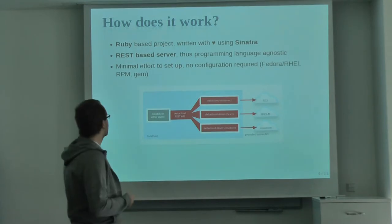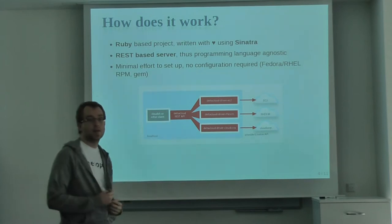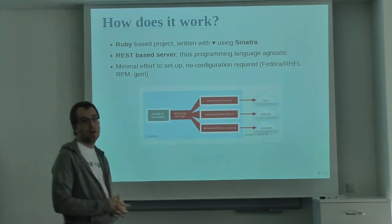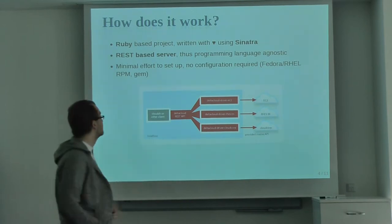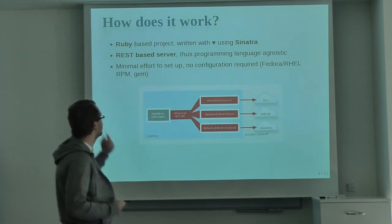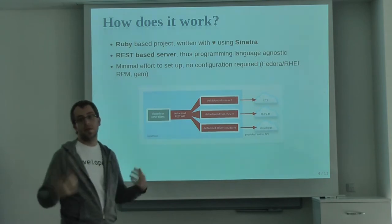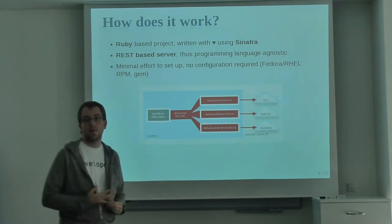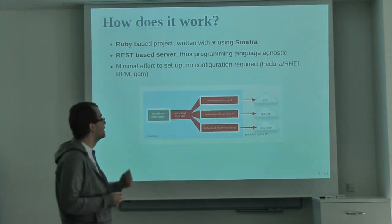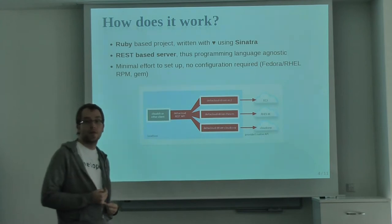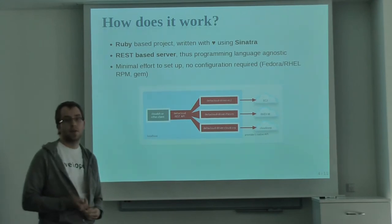So how does Delta Cloud work? Delta Cloud is written in Ruby using Sinatra — we are not using Rails or anything like that. It's a very simple, small set of Ruby files connected together. It's a REST-based server, so it's programming language agnostic — if your language has an HTTP client, you can use Delta Cloud. It has minimal effort to set up, with packages for Fedora, and we're working on Debian packages.